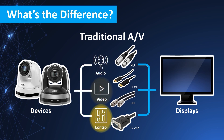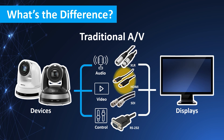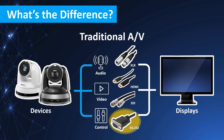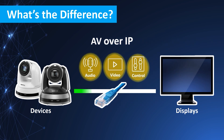and control signals requiring specific types of wire such as XLR, HDMI, SDI, or RS-232. With AV over IP, all signals are simply carried over a single standard ethernet cable.